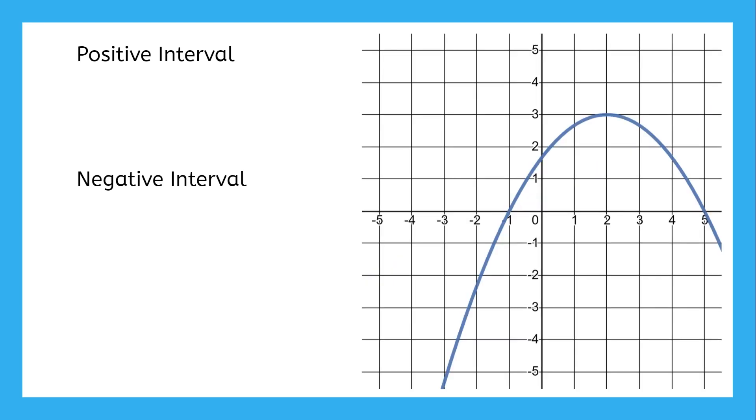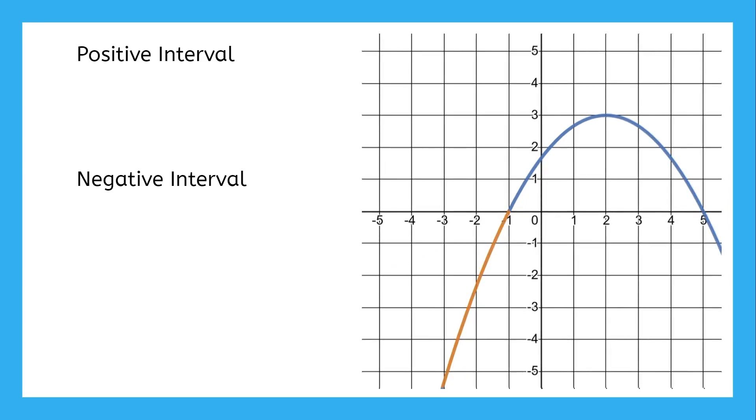What about this function? If we start on the left side, the first interval is below the horizontal axis, or negative. Because it starts off the graph and ends at negative one, we write that interval as between negative infinity and negative one.